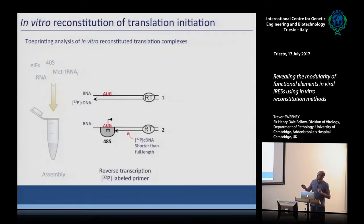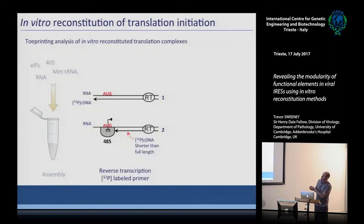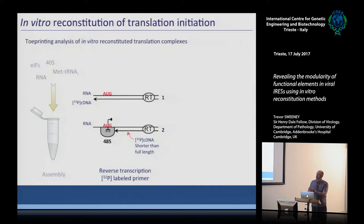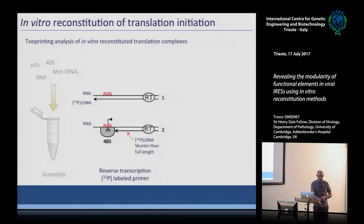To explain how toeprinting works: we assemble our reaction with an RNA containing a start codon. Adding a radiolabeled primer with reverse transcriptase generates a P32-labeled cDNA copy that goes all the way to the 5' end — that's our full-length signal. If we've formed a stable 48S complex on the RNA, performing the same RT reaction generates a truncated cDNA product, because the ribosome sitting on the RNA arrests the reverse transcriptase.